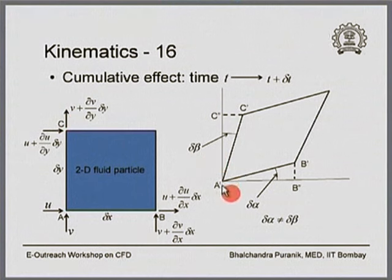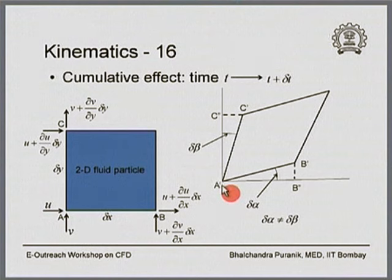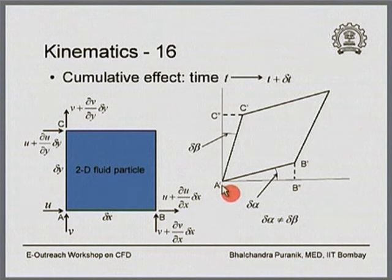Everything — stretching, rotation — is happening simultaneously. For the purpose of understanding, we decompose the motion: we say the particle is first stretched, then rotated. So A-prime B-double-prime is considered the stretched length, and then it is rotated through angle delta alpha. This decomposition of motion allows each component to be independently analyzed, even though in reality everything happens simultaneously.